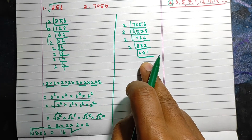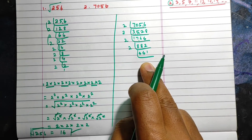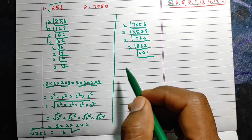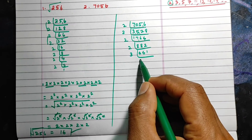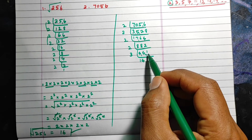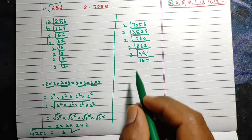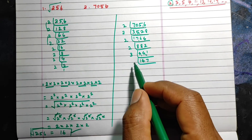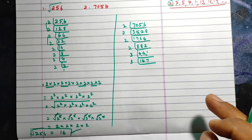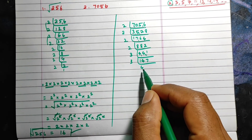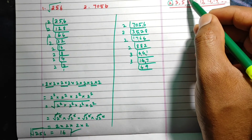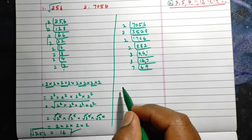Now 441 is an odd number. The smallest odd prime number is 3, so let's start with the 3 table. Dividing: 441 ÷ 3 = 147, and 147 is also an odd number. We continue with the smallest prime numbers one by one. 147 ÷ 3 = 49. Now 49 we can directly take in the 7 table.